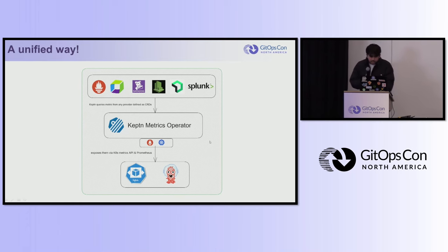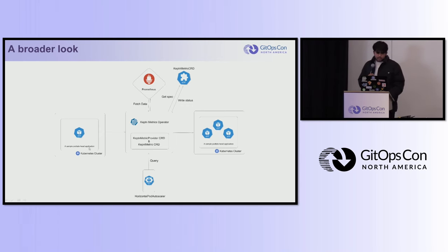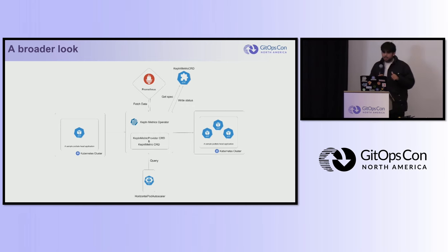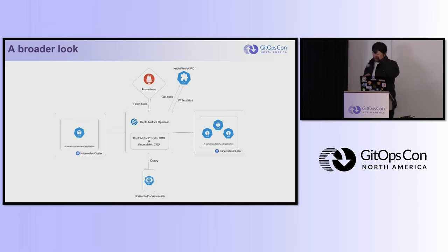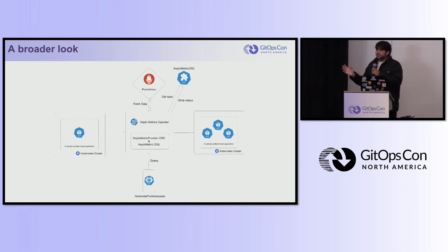These are also defined in a CRD. In the next demo, we'll have the potato head application in our cluster with the Keptn metric and provider deployed. It's going to fetch metrics from Prometheus, and then we'll apply HPA over that. If certain conditions are met, HPA should automatically scale the pods to three.